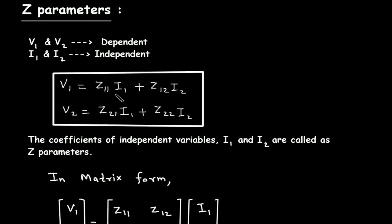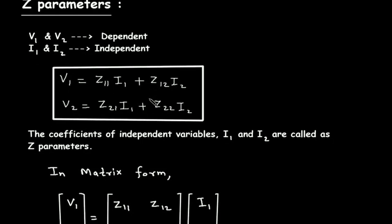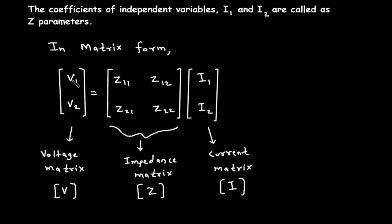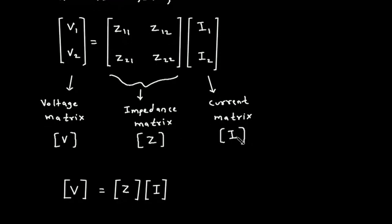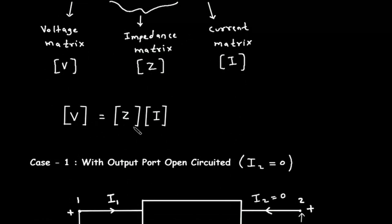So Z11, Z12, Z21, and Z22 are called Z parameters. In matrix form, this will be V1, V2 equal to Z11, Z12, Z21, Z22 multiplied by I1 and I2. This is called the voltage matrix, this is called the impedance matrix, and this is called the current matrix. Therefore, V is equal to Z into I in matrix form.